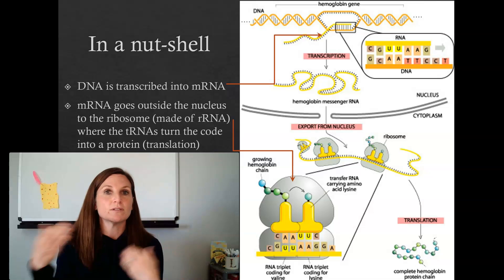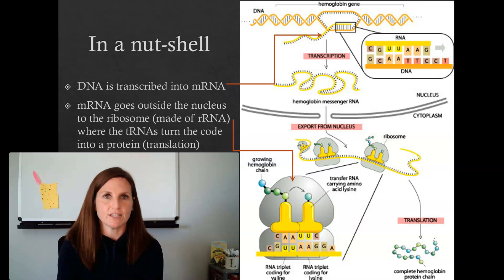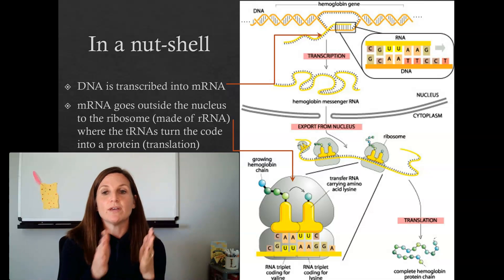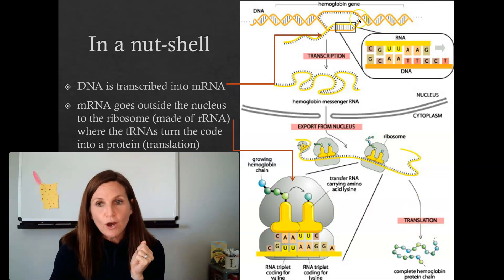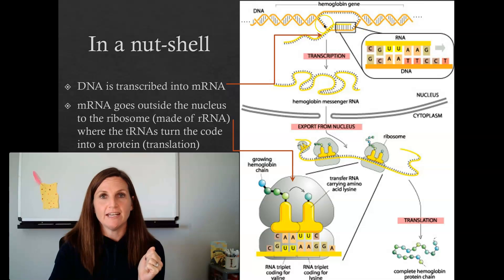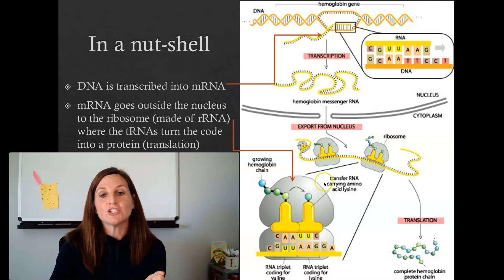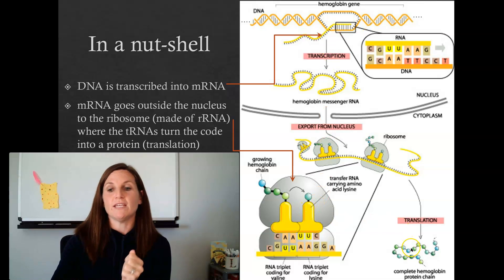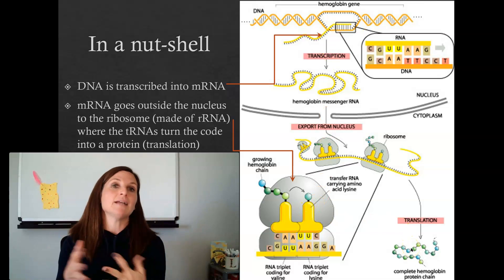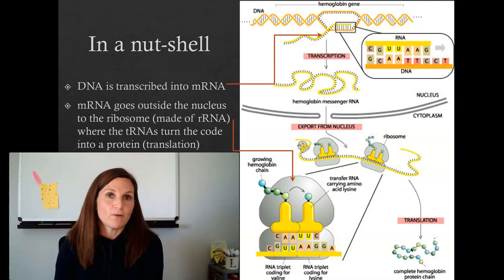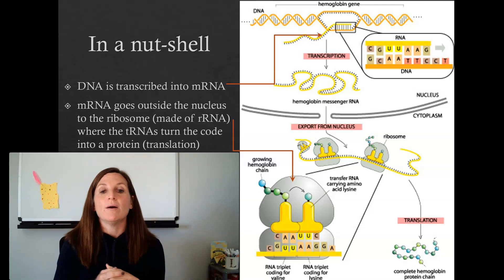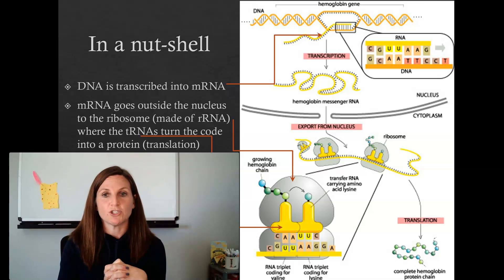The protein then goes into your cell and transports blood, and either does or does not have sickle cell disease. The code of your DNA changes the structure of the protein, and that determines whether or not you have sickle cell disease or whether your blood is able to transport oxygen without trouble.